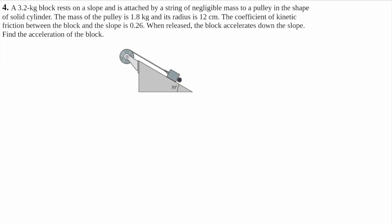Here's number four. We have this block that's on this ramp, and it's connected to this pulley by a string. It tells us this block will accelerate down the ramp, and we need to find the acceleration of this block.